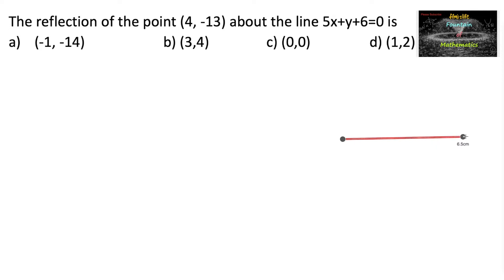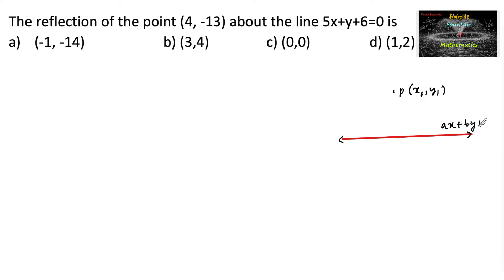Reflection of a point is the same as the image of the point. We have a concept: if P(x1, y1) is a point and the line is given as ax + by + c = 0, then the image of the point (x1, y1) under this line is given by Q(α, β).